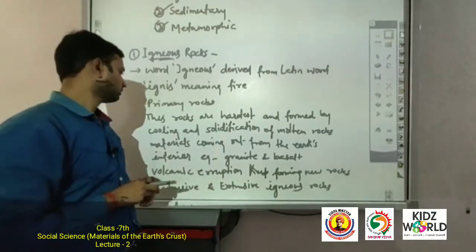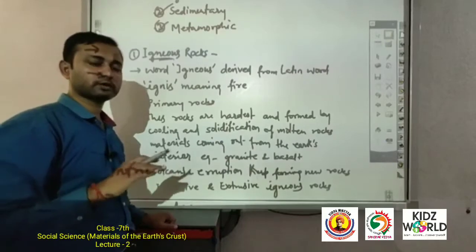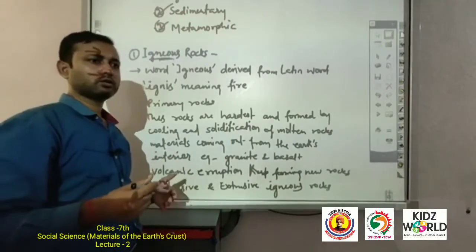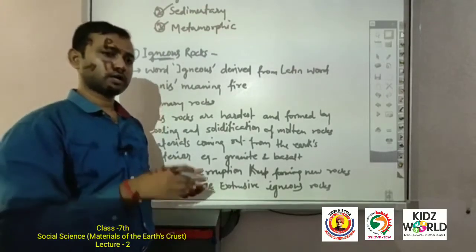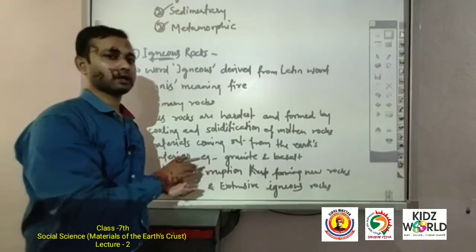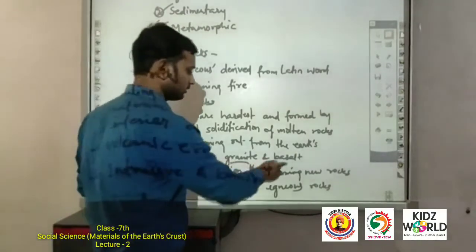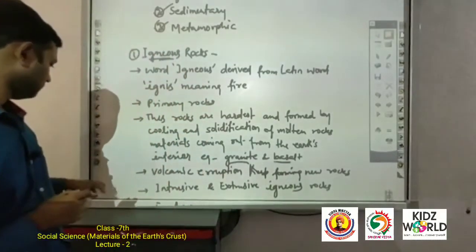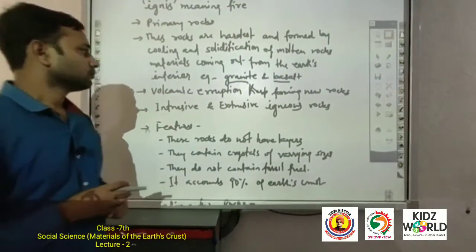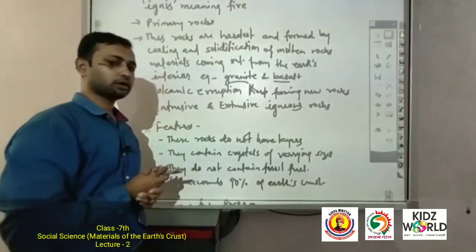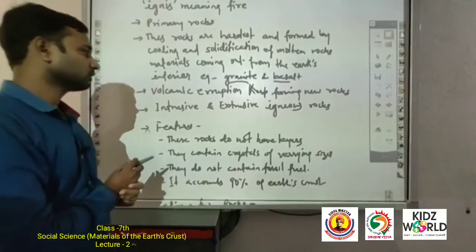Igneous rocks are formed when molten material from the earth's interior comes out and solidifies. Examples are granite and basalt. Volcanic eruption also keeps forming new igneous rocks. We can observe igneous rocks in two ways: one is intrusive igneous rocks, and the other is extrusive igneous rocks.